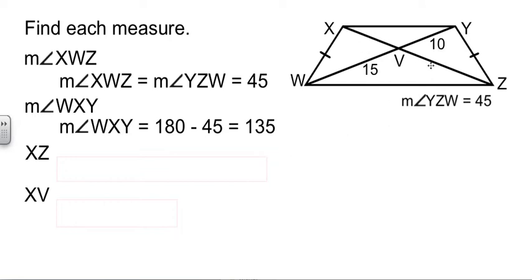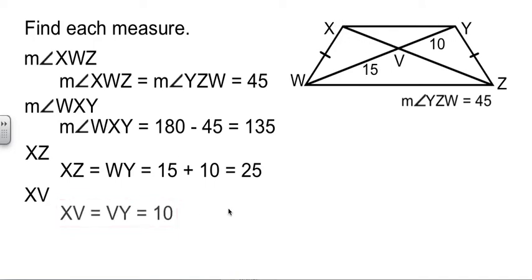Now the length of XZ will be the same as the length of WY. WY is 10 plus 15, or 15 plus 10, which is 25. And then it's not much of a reach. If it's 10 this way, then it'll be 10 this way. Because that makes an isosceles triangle in there.